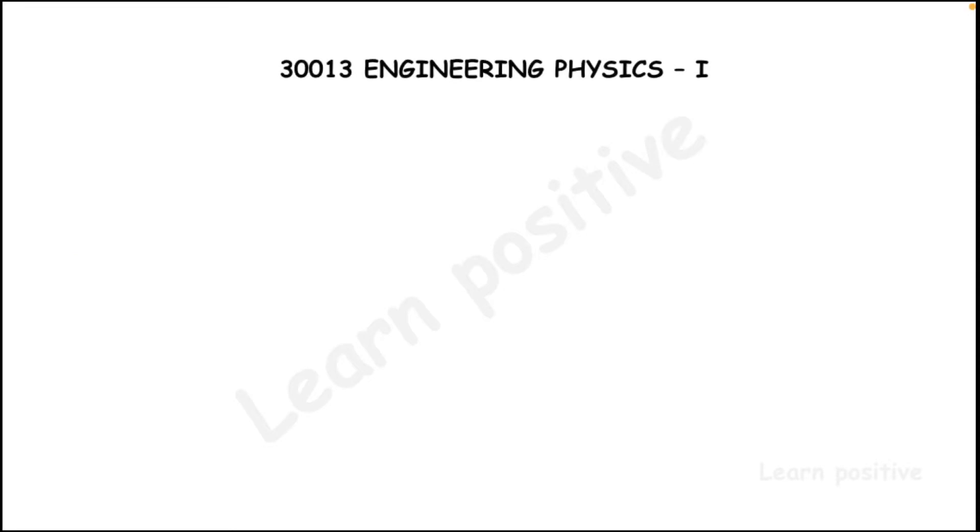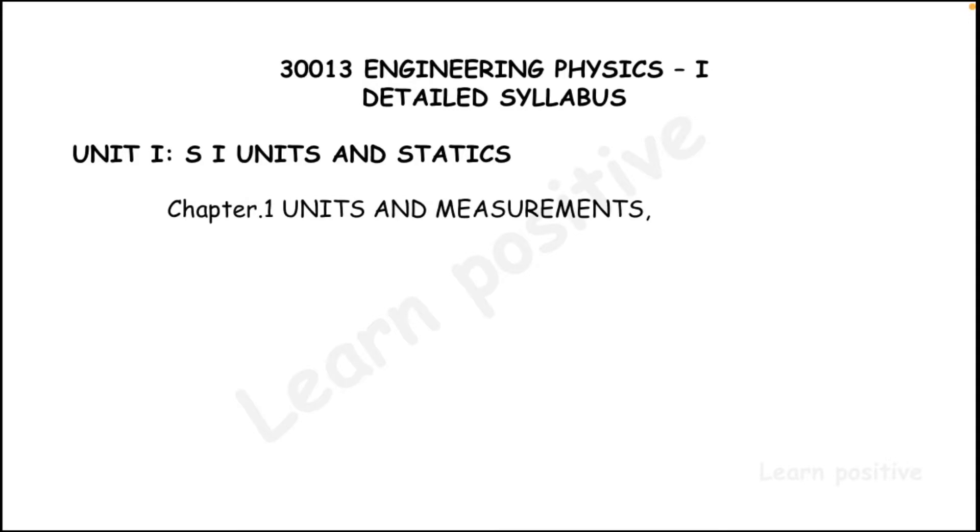The subject code is 30013, Engineering Physics 1, detailed syllabus. For diploma students, we get Unit 1, SI Units and Statics. In this Unit 1, we have Chapter 1, Units and Measurements, and Chapter 2, Statics.